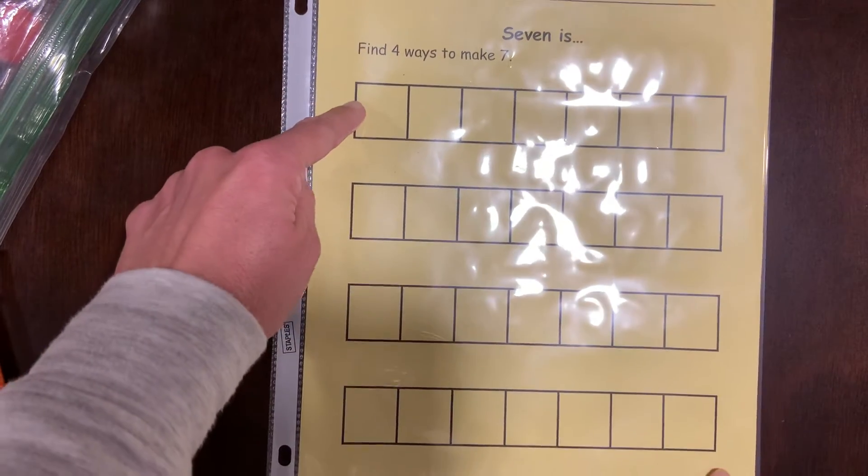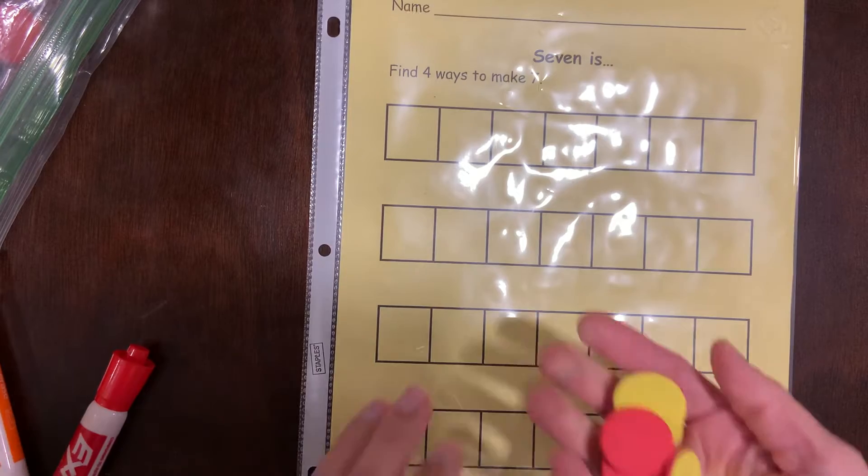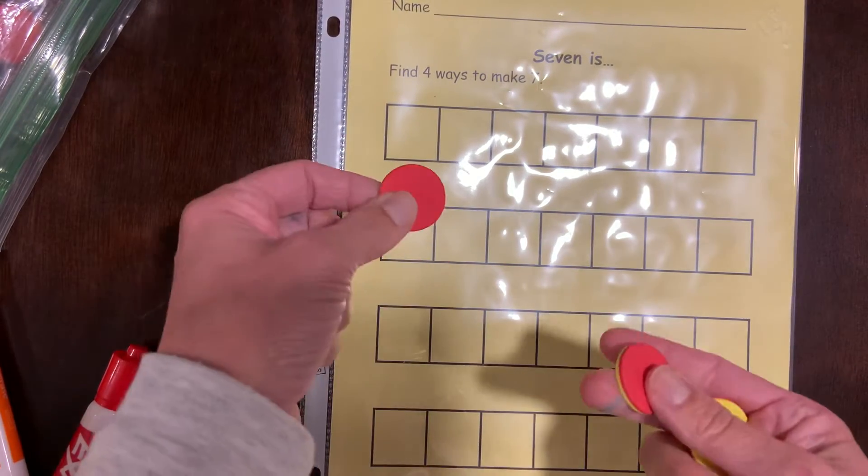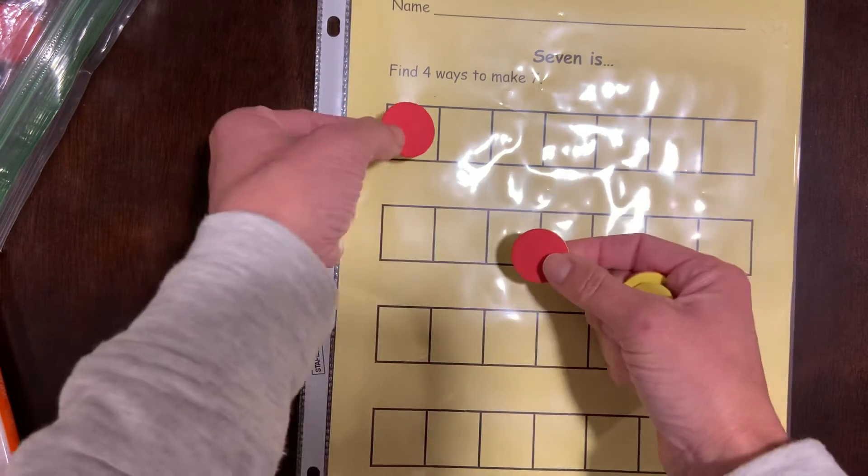We're going to see if you can meet the challenge of finding four different ways to make seven. And again, we're going to use our red and yellow counters to help us. Your first job is to count out and be sure you have seven red and yellow counters, okay?